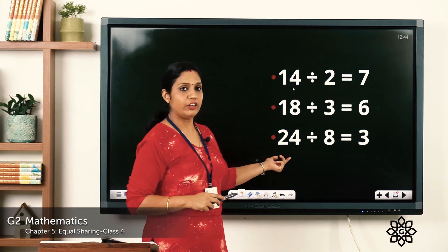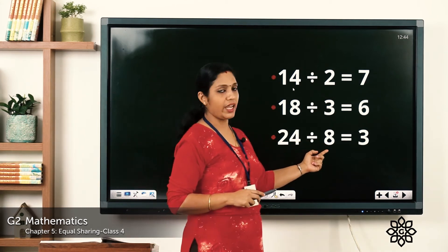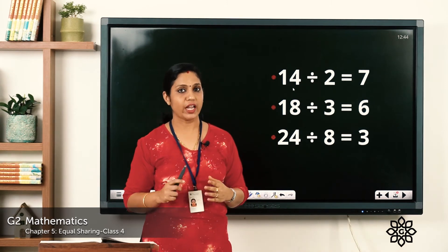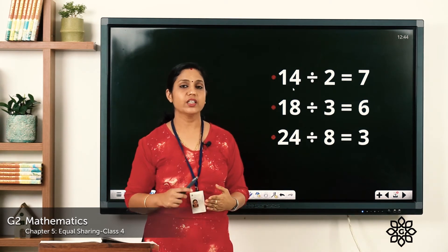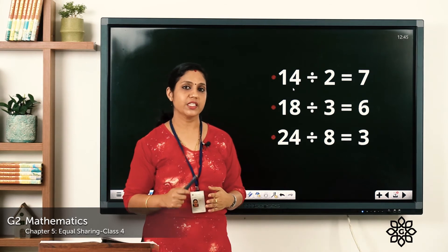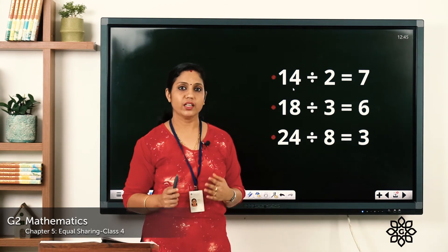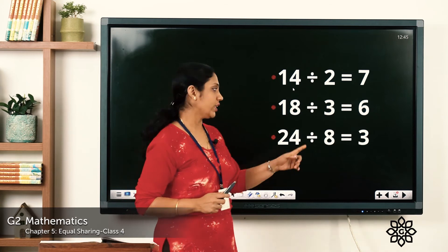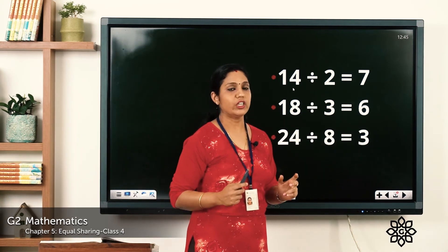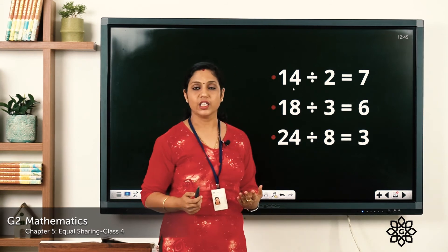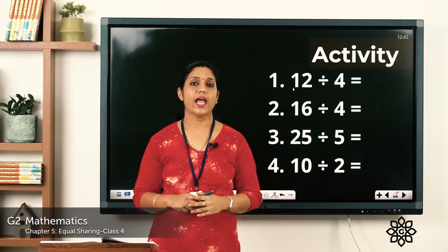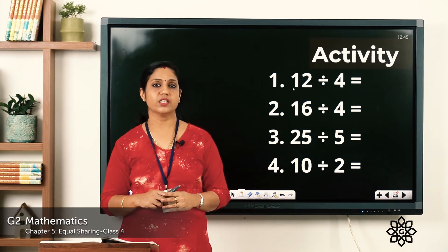Next, 24 divided by 8. Check the table of 8: 8 ones are 8, 8 twos are 16, 8 threes are 24. So 3 times in the 8s table we reach 24. Therefore 24 divided by 8 is equal to 3. Hope you have understood.